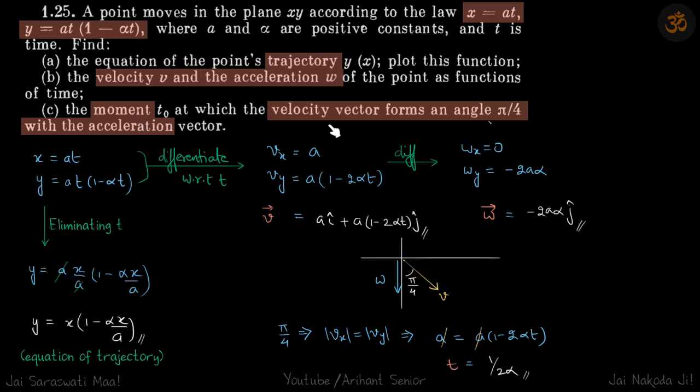Then at what time velocity forms an angle π by 4 with acceleration. So this is the velocity vector we can write in i and j form. Similarly acceleration also we can write in i and j form.